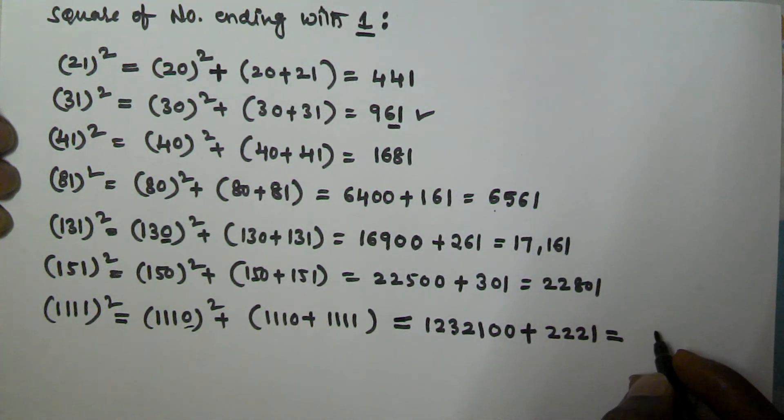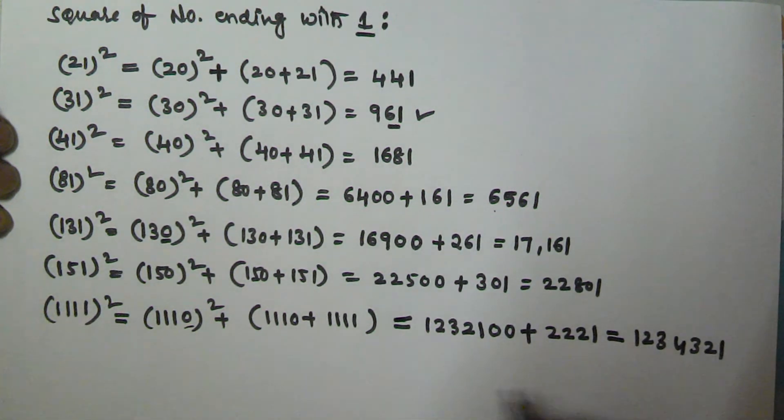So when we add this one we get 1 2 3 4 1 2 3 4 and 3 2 1, so that is the square of 1111.